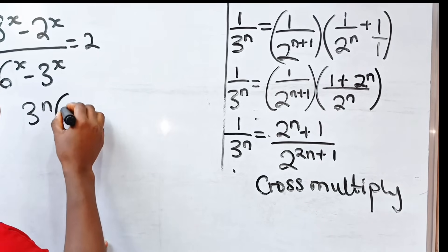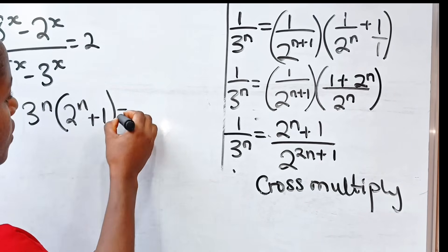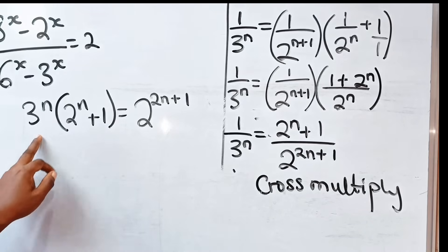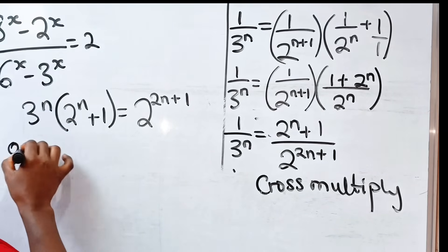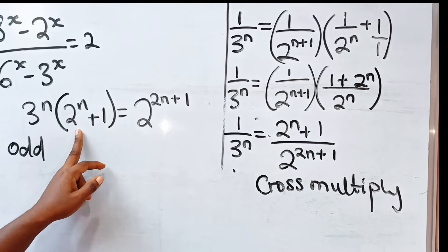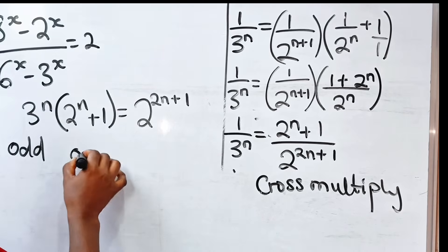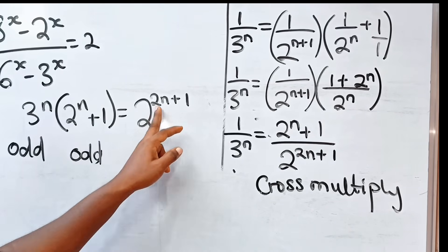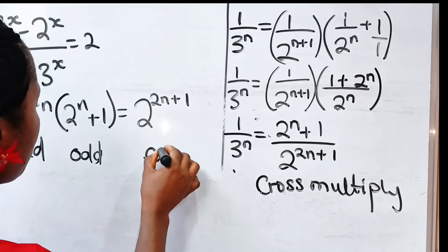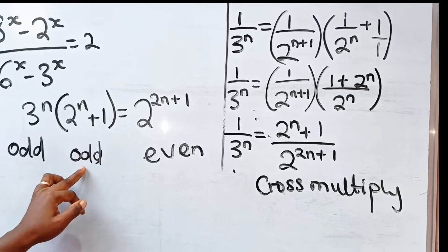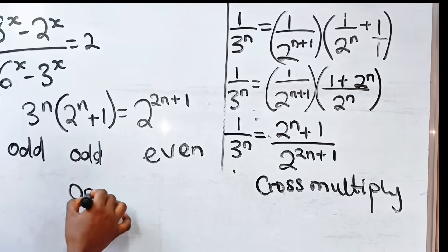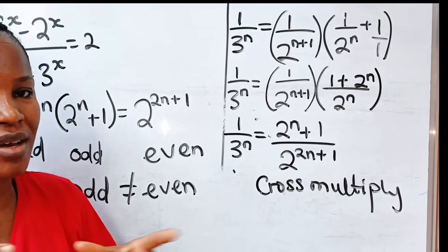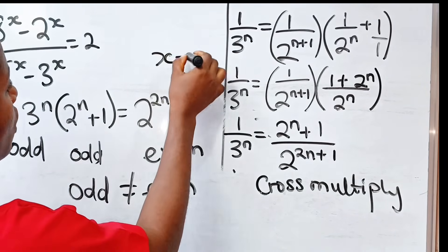Cross-multiplying, we have 3 to the power of n multiplied by 2n plus 1 is equal to 2 to the power of 2n plus 1. Now, 3 to the power of n gives odd, and 2n plus 1 gives odd because 2n is even and adding 1 makes it odd. Odd multiplied by odd gives odd, but 2 to the power of 2n plus 1 always gives even. Odd is not equal to even, so the only value of x is x equals 1.